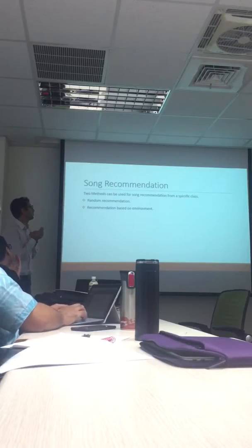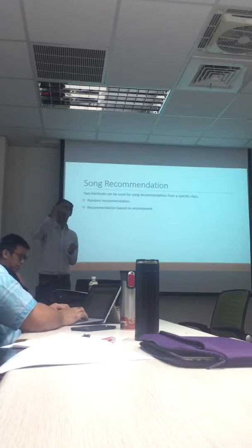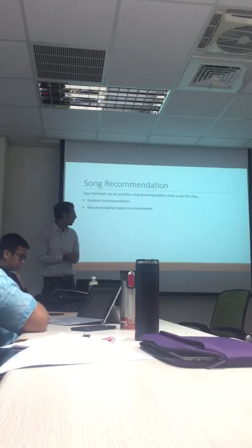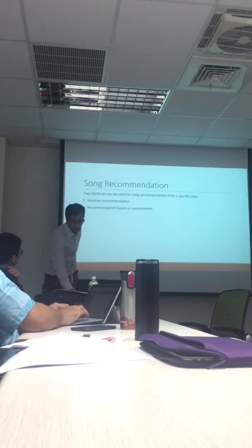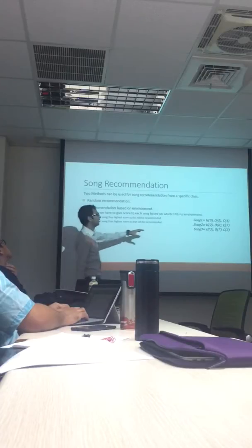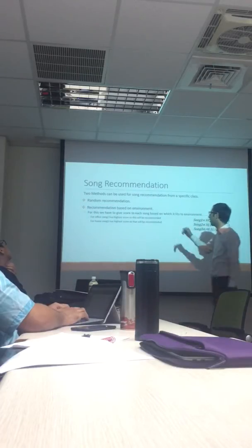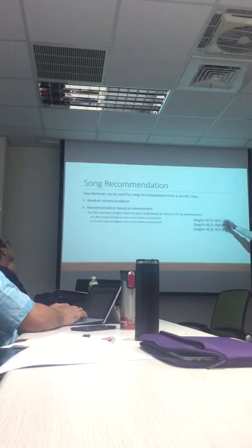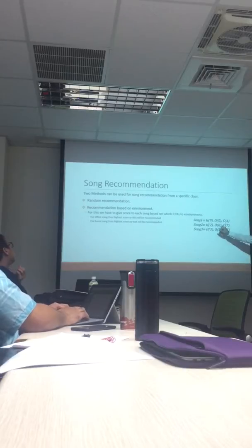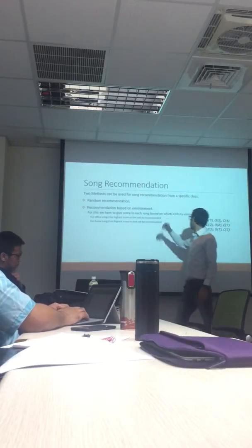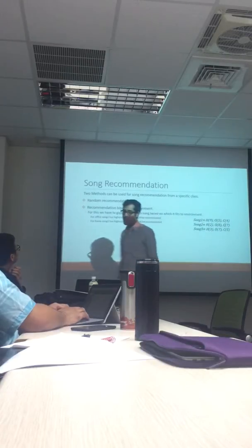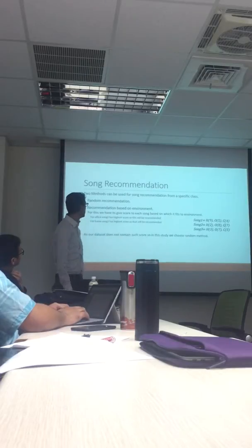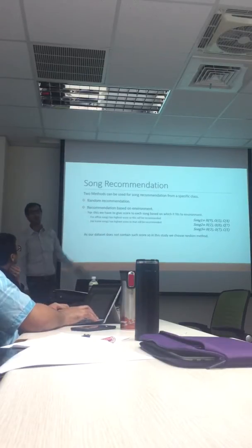For song recommendation there are two methods. The first is random selection within an emotion class. The second is environment-based recommendation, where each song is scored per environment — for example, home, office, or coffee break — using weights, and the highest-scoring song gets priority. Since our dataset does not contain these weights, we use the random method.